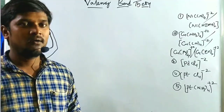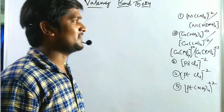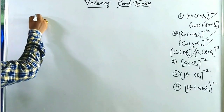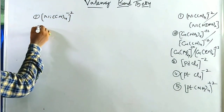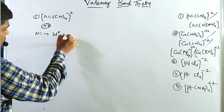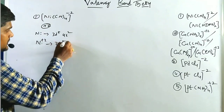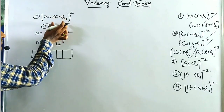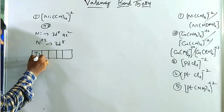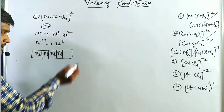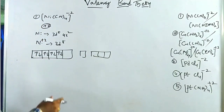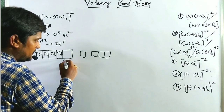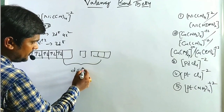Now let us solve problems for square planar complexes according to VBT. First example: [Ni(CN)₄]²⁻. Oxidation state is +2. Nickel configuration is 3d⁸ 4s². Ni²⁺ gives 3d⁸ with 8 electrons. With strong field ligands CN⁻, all 8 electrons pair up. We need 4 orbitals for 4 ligands. The hybridization is dsp², involving the n-1 d orbital — therefore it is an inner orbital complex.